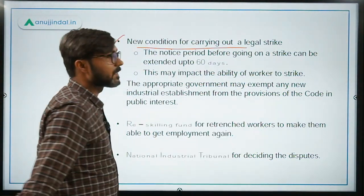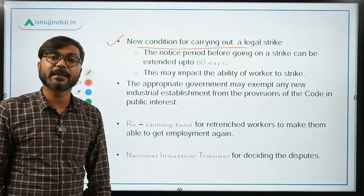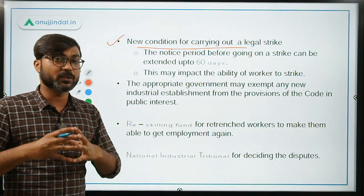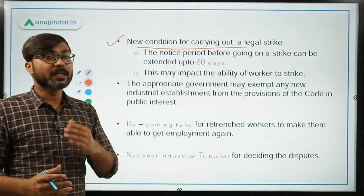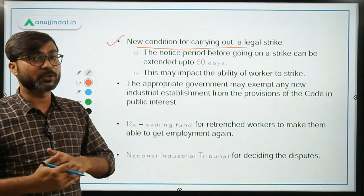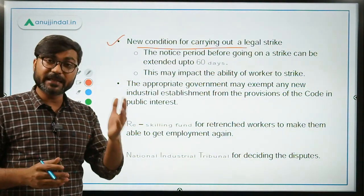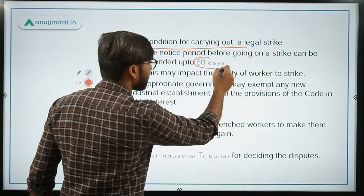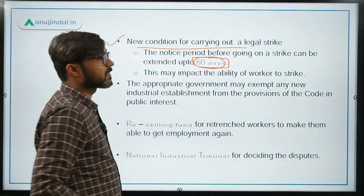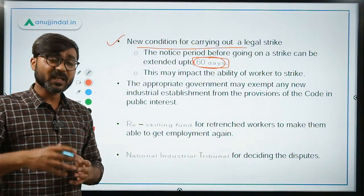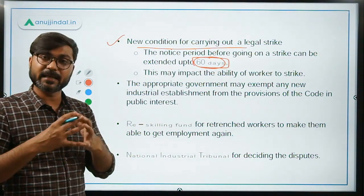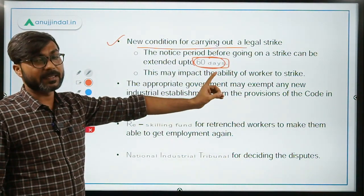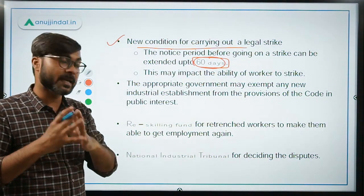There is a new condition for carrying out a legal strike. Earlier, a legal strike could be called on 14 days' advance notice, and the 14-day advance notice provision still remains. However, an additional provision has been added for conciliation, due to which the legal strike notice period can be extended up to 60 days. During that notice period, labours cannot go on strike. This means that the ability of labours to go on strike has become weaker.